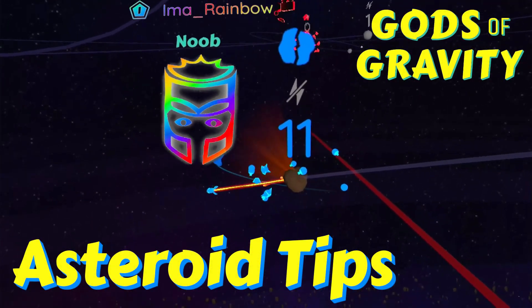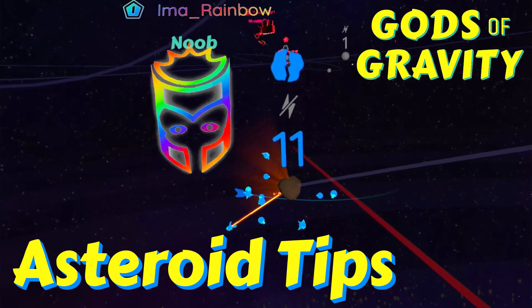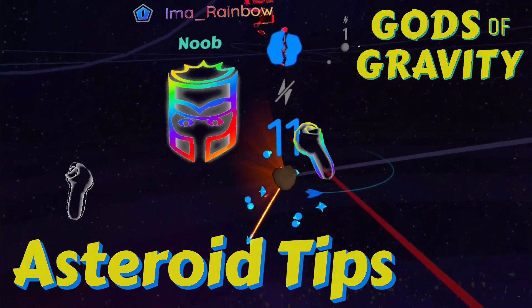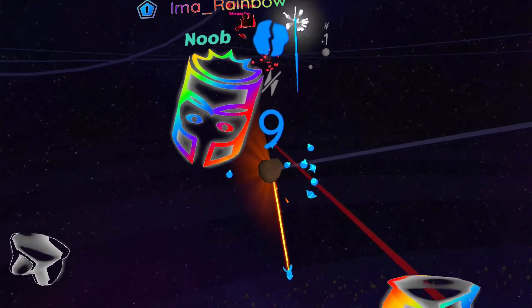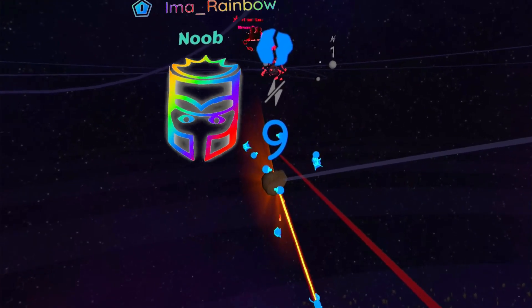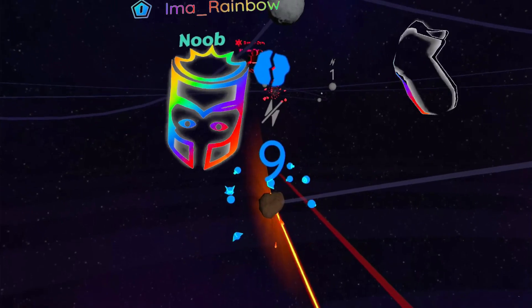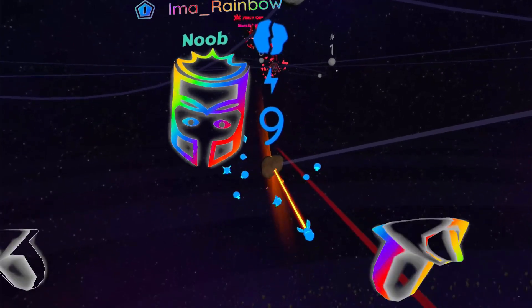Hello everybody, I'm a rainbow and today in Gods of Gravity, I am going to be talking about asteroids. Yes, they hurdle through space and you want to get them because mining them will give you the special ships that you need to conquer the universe. Let's jump in and get started.